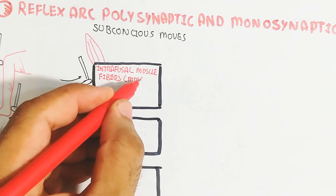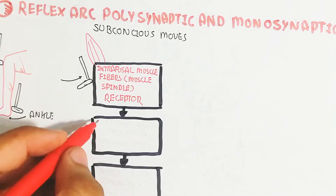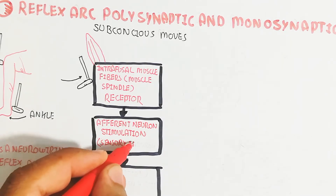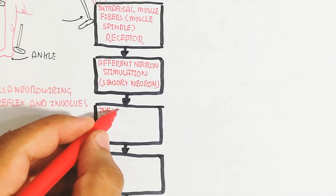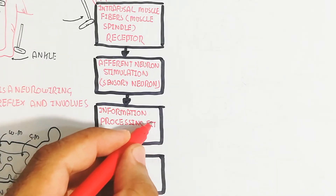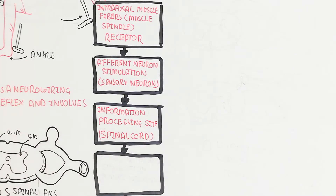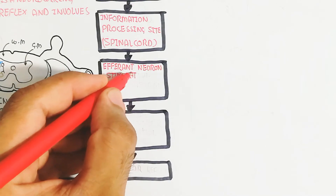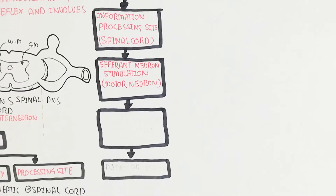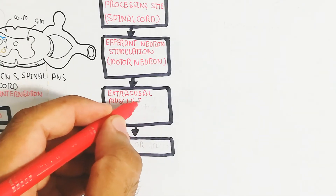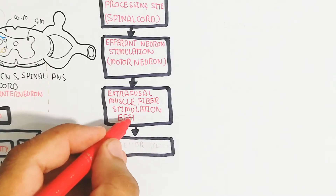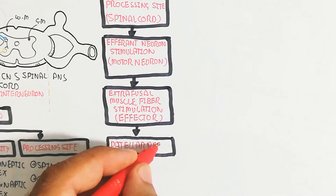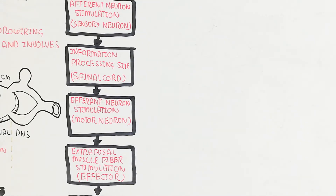To summarize the steps: the intrafusal muscle fiber (the muscle spindle) acts as the receptor, receiving the stimulus. This leads to afferent (sensory) neuron stimulation. The sensory neuron sends information to the spinal cord — the central nervous system — which contains the interneuron. After the interneuron, the efferent (motor) neuron stimulates the extrafusal muscle fiber, producing the effect. This is the patellar reflex.